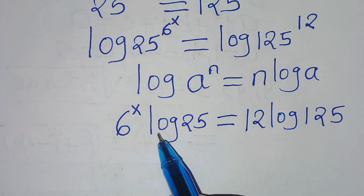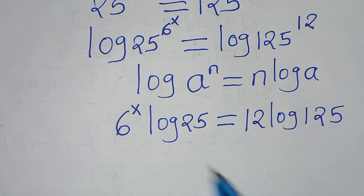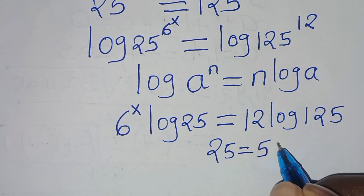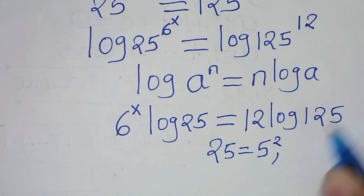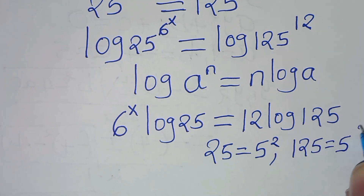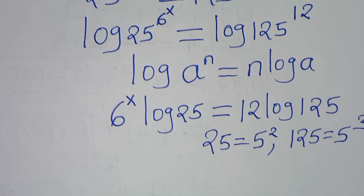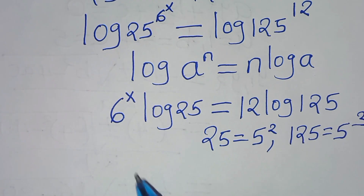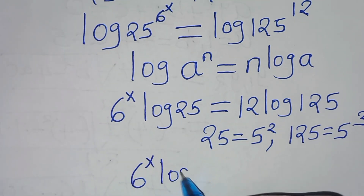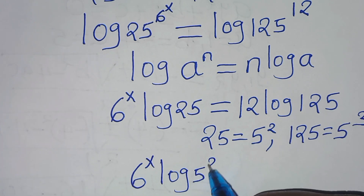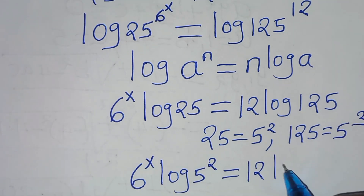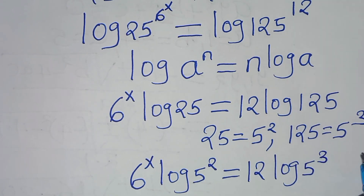Now, the next step from here, we can express 25 as 5 to the power of 2, and we can express 125 as 5 to the power of 3. Substituting this, we have 6 to the power of x, then log 5 to the power of 2. This is equal to 12 log 5 to the power of 3.